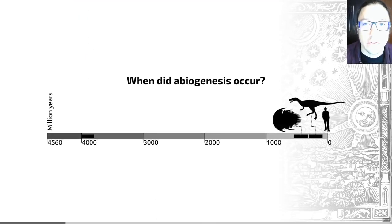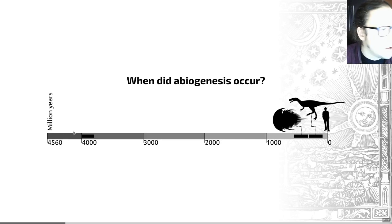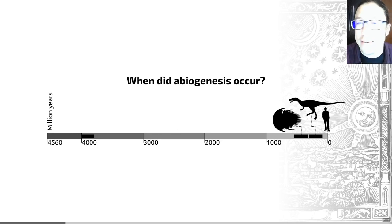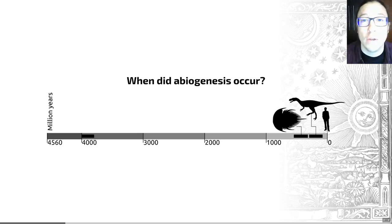So where does that leave us? We have the Late Heavy Bombardment at around 3.9 billion years ago, but we also have this quiet period shortly after Earth's origins — the accretionary phase — in which abiogenesis could have occurred. The balance of probabilities suggests that it wouldn't be ridiculous for abiogenesis to have occurred on Earth in that quiescent period and then survived through the Late Heavy Bombardment, after which evolution continued. That's it for video number one. In the next videos, we're going to look at some possible processes by which abiogenesis may have occurred. Thank you for watching.